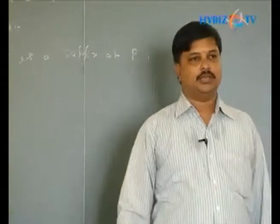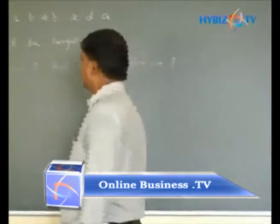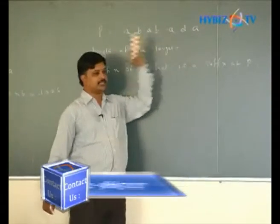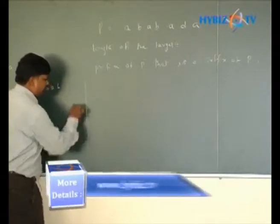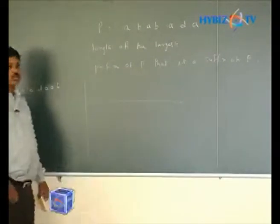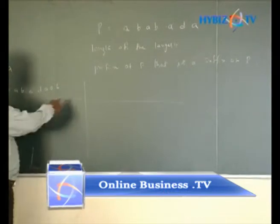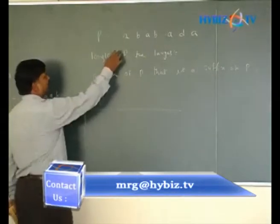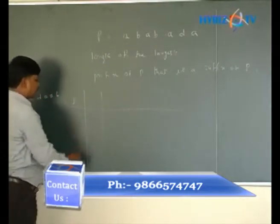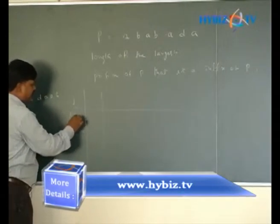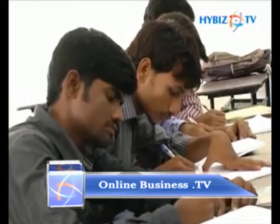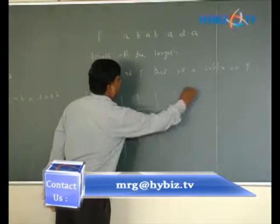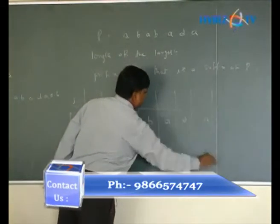We have to write a table. The first column is j, and we write the pattern p of j: a b a b a d a. The indexes are 0, 1, 2, 3, 4, 5, 6. Now let us calculate the failure function one by one.